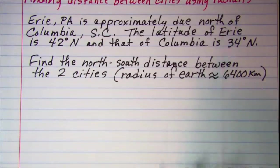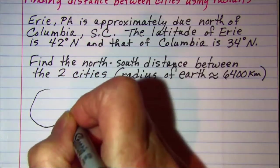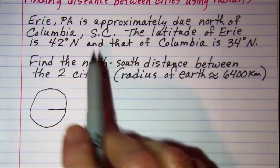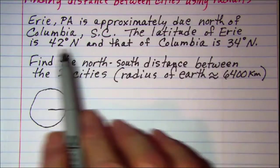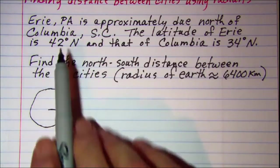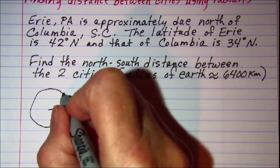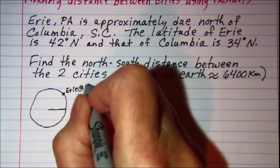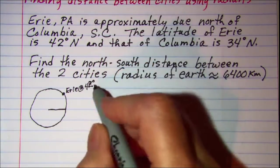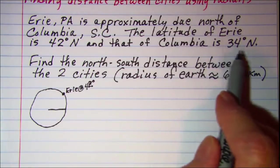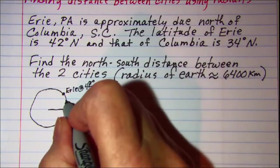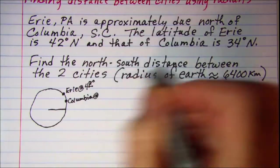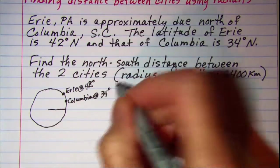Now let me draw a sketch — just a two-dimensional sketch of the Earth — and this is our equator. We're told that the latitude of Erie is 42 degrees north, so we can place Erie right here at 42 degrees north of the equator. And then Columbia is 34 degrees north, so let's put Columbia here at 34 degrees north of the equator.